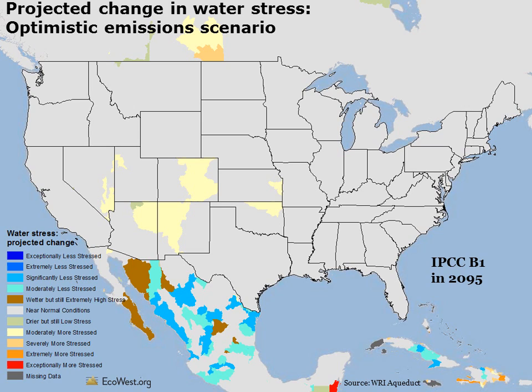This view shows the IPCC's optimistic B1 scenario. A few areas in the inland west are expected to become moderately more stressed by 2095, but otherwise the conditions are expected to be near baseline.